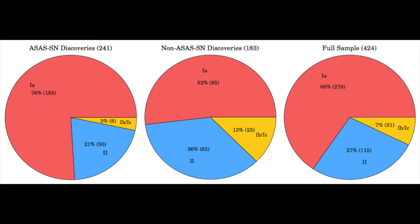This figure shows a breakdown by type of the ASASSIN discoveries, the supernovae discovered by other observers, and the entire supernovae sample for 2014 and 2015. The ASASSIN sample very closely resembles an ideal magnitude limited sample predicted by Li et al from the LOSS dataset.